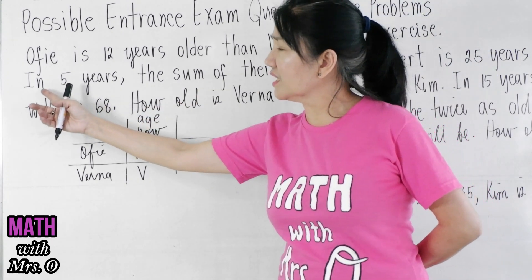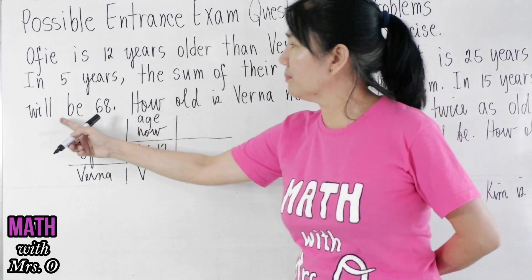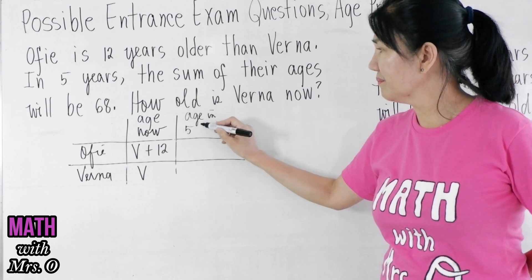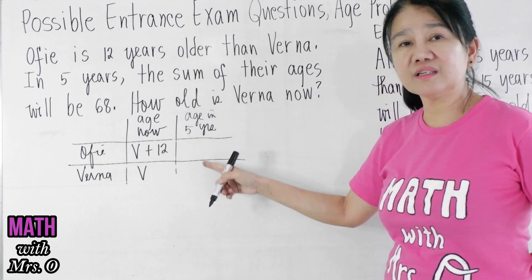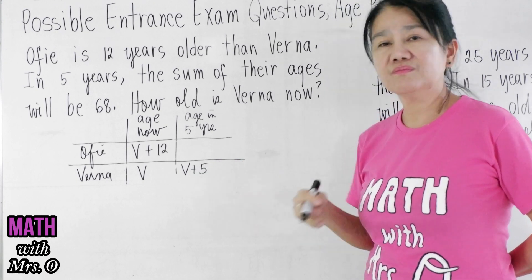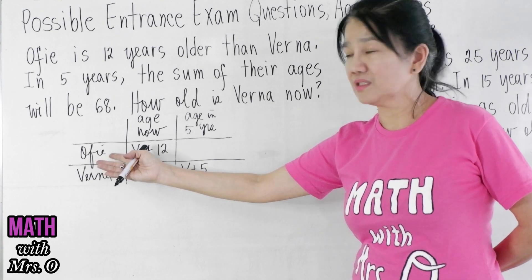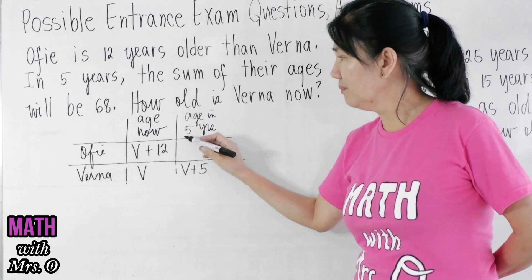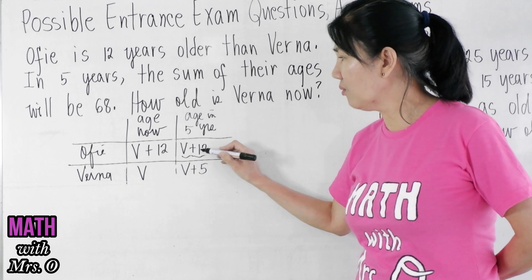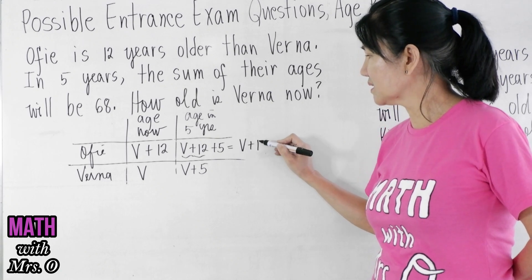In the second statement, it says here: in 5 years, the sum of their ages will be 68. So the age in 5 years — Verna's age in 5 years will be V plus 5. What will be the age of Ofi in 5 years? It will be V plus 12 plus 5, which is V plus 17.